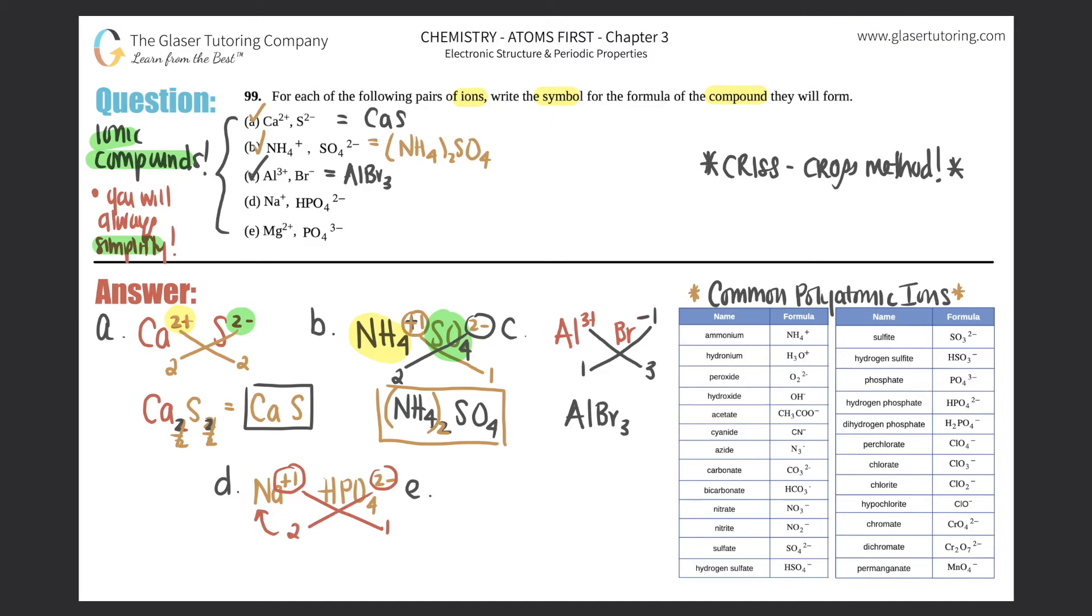The negative two will criss-cross down to tell me I need two sodiums. Sodium is not a polyatomic ion, so I don't need parentheses for that. So this would be Na₂HPO₄. There's technically one of these, but if there's one you don't need to specify, so you can get rid of the parentheses. That would be the compound for this one: Na₂HPO₄.